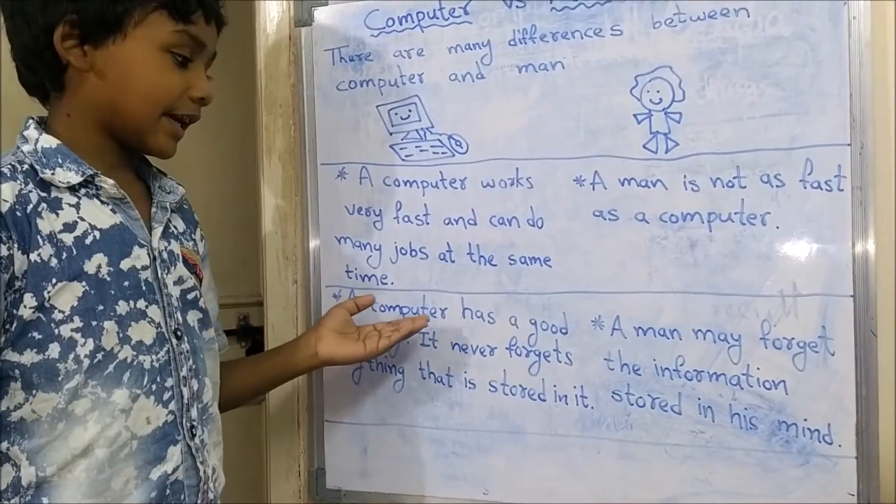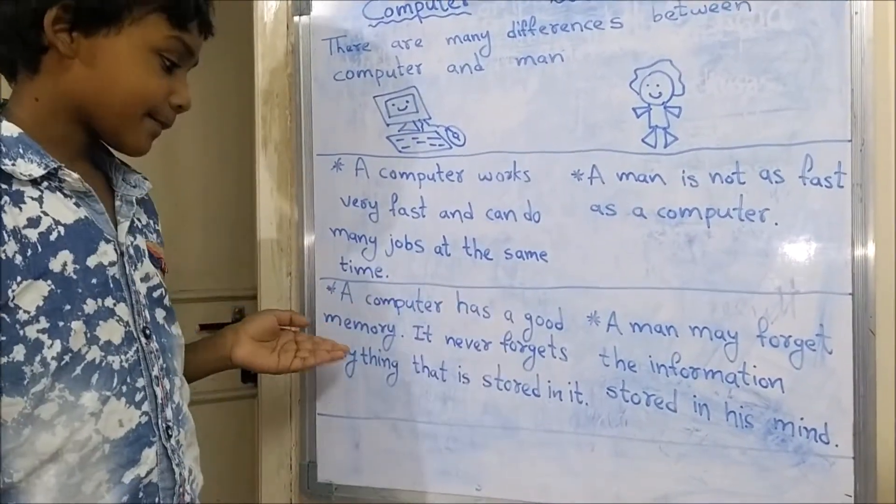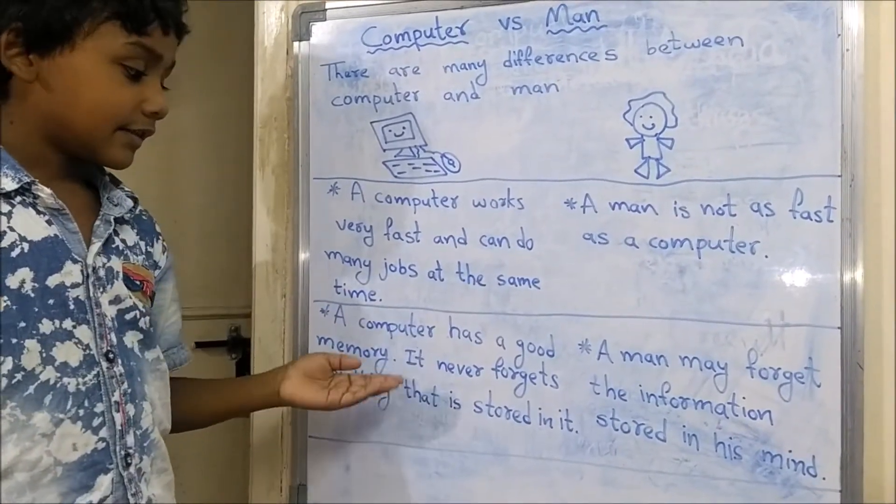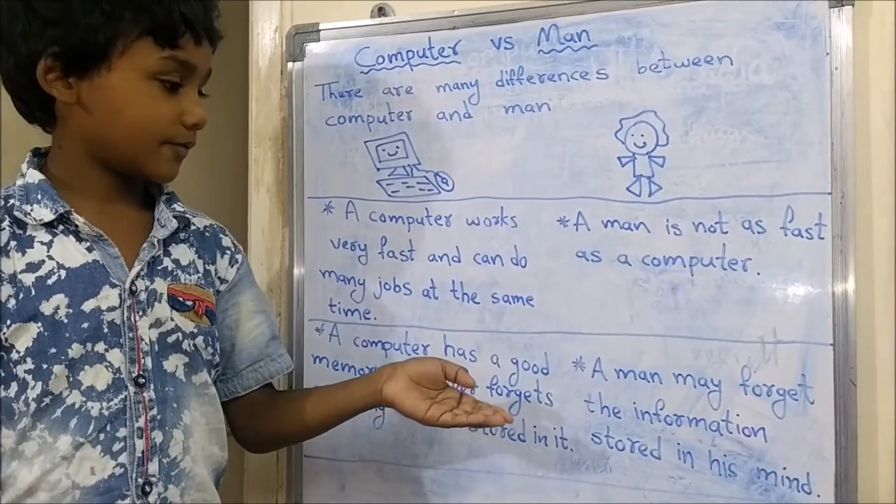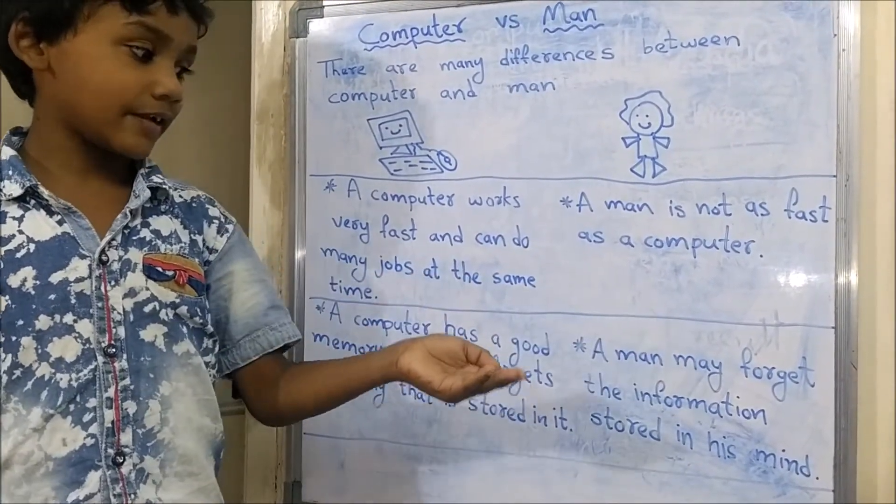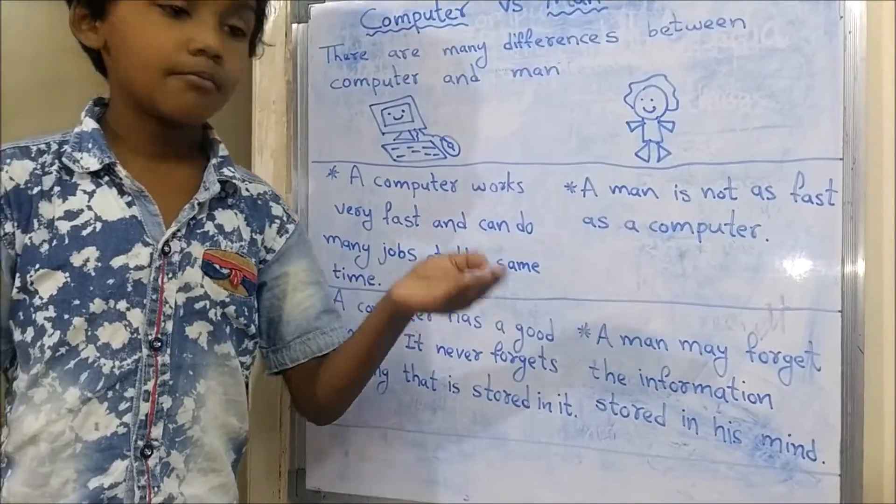A computer has a good memory. It never forgets anything that is stored in it. A man may forget the information stored in his mind.